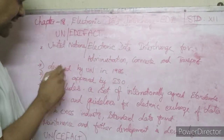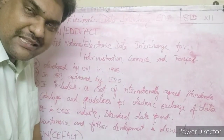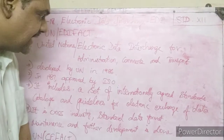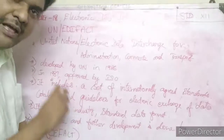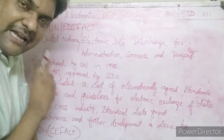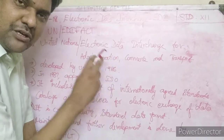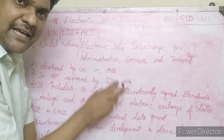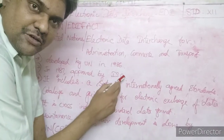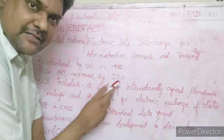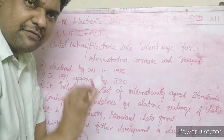UN EDIFACT was developed by the United Nations in the year 1986. In 1987, it received ISO certification — it was approved by ISO. ISO stands for International Organization for Standards. Receiving ISO approval means the format meets internationally recognized rules and regulations.